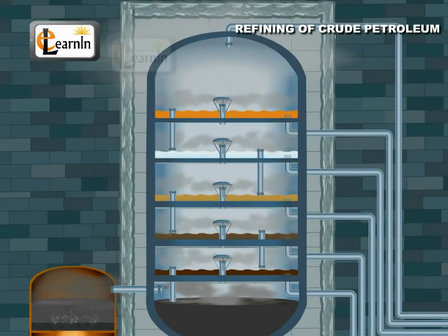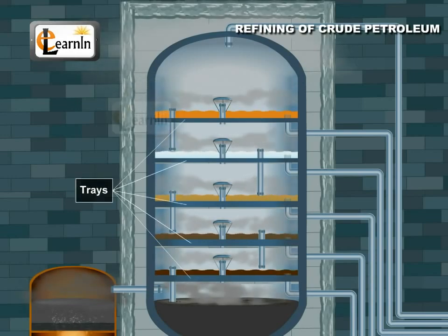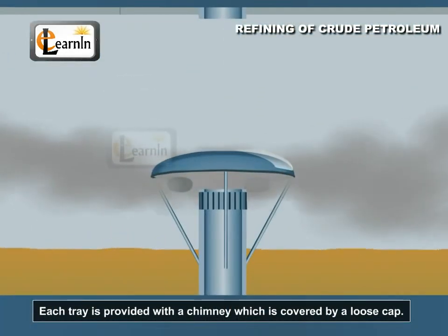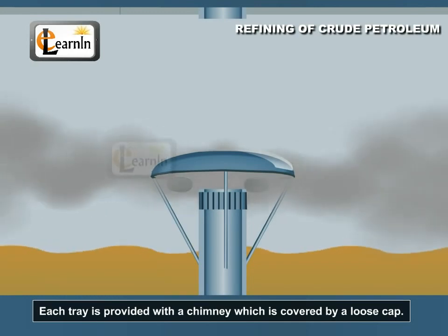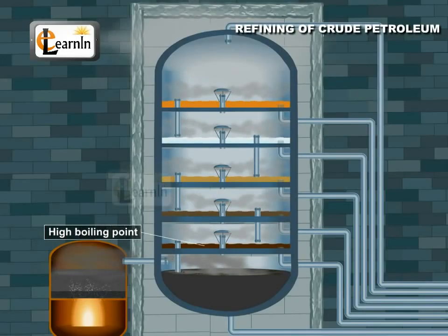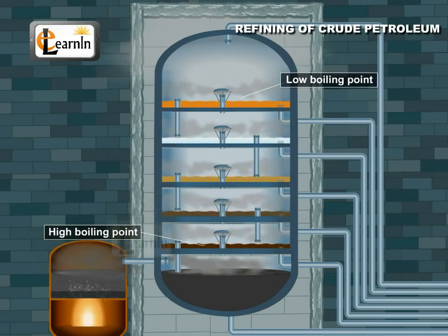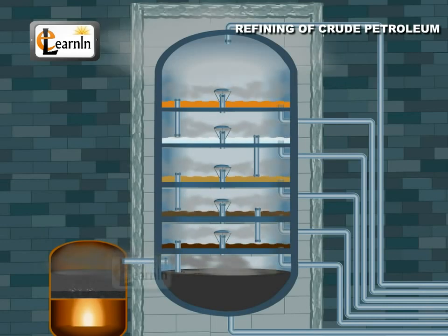The fractionation column is a tall, cylindrical tower containing a number of horizontal stainless steel trays. Each tray is provided with a chimney which is covered by a loose cap. Fractions having higher boiling points condense first at the lower trays, and fractions having low boiling points condense at the higher trays.